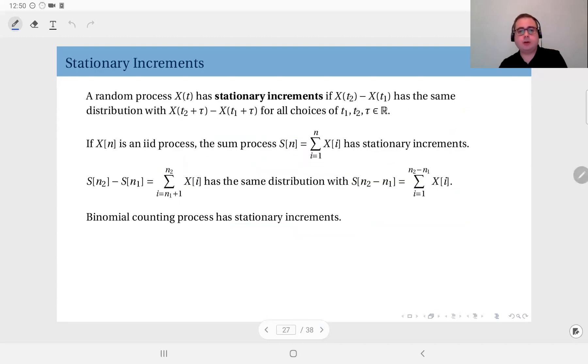Another very important property is what we call stationary increments. So we talked about the independence just now and now we will talk about their distribution. A random process X(t) has stationary increments if X(t2) minus X(t1), the increment from time t1 to t2, has the same distribution with X(t2 plus tau) minus X(t1 plus tau).